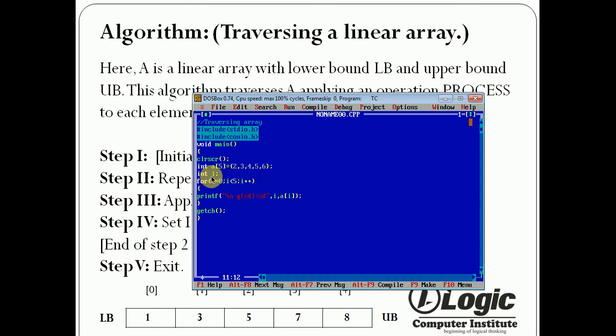Here declare the counter int i. Using a for loop we access or process each element in the array. So i equals 0, this is the initialization, this is the condition. 5 elements, so I give the condition i is less than 5, and i plus plus.